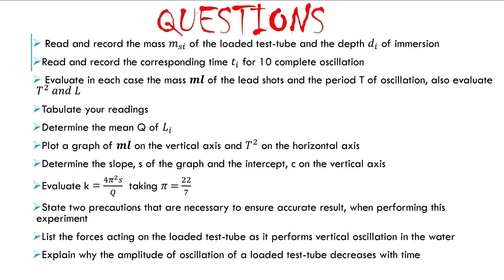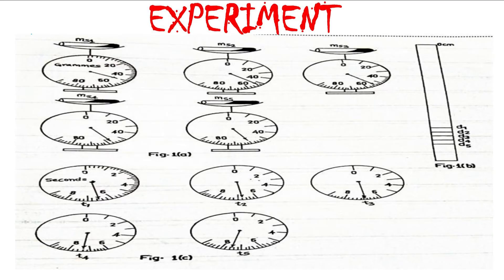Interpreting this alternative to practical: look at the diagram here. The first mass of the test tube and lead shot combined is 51 grams. The second is 53, the third is 55, the fourth is 58, and the last is about 60. That is the total of both the test tube and the lead shot as seen in the diagram. We can now find the mass of the lead shots by deducting the original mass of the test tube, which was given as 20 grams.